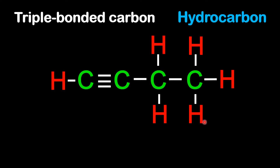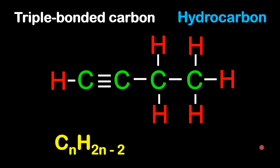To be a hydrocarbon, it means the only other element beside carbon must be hydrogen. To apply the general formula CnH2n-2, count the number of carbons — here we have four. Multiply that by two, then minus two: four times two is eight, minus two gives six. So there are six total hydrogen atoms on this compound.